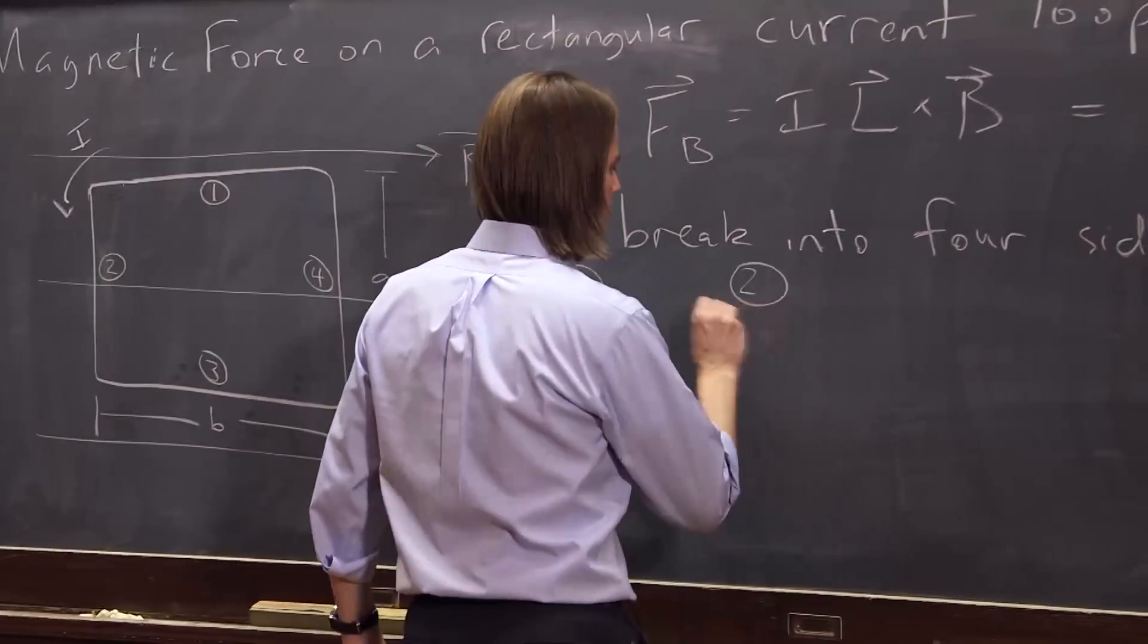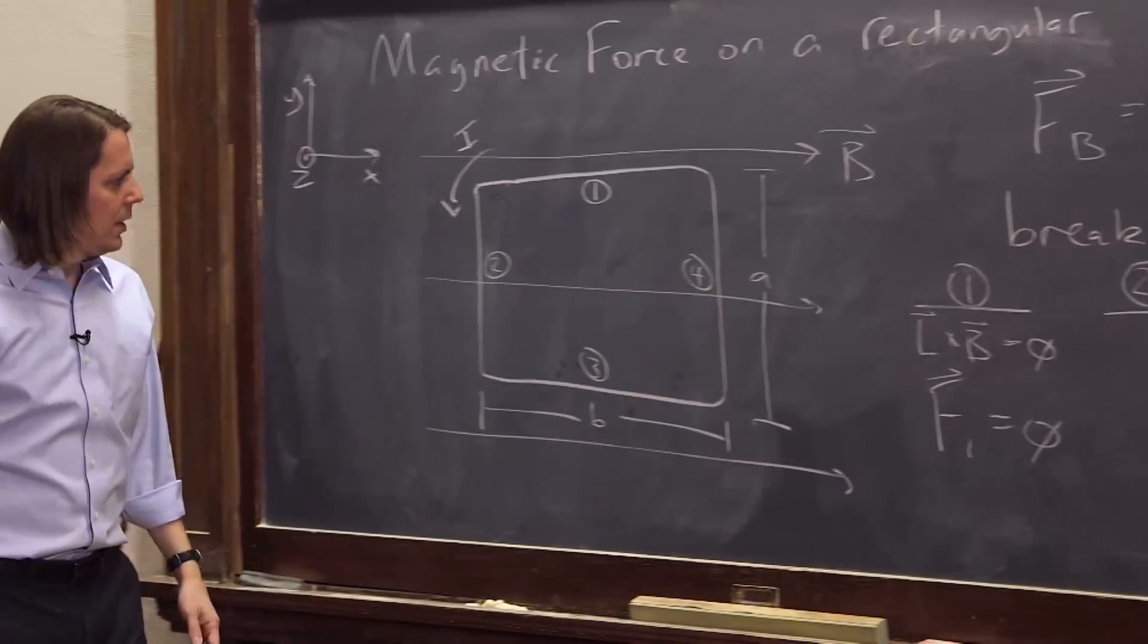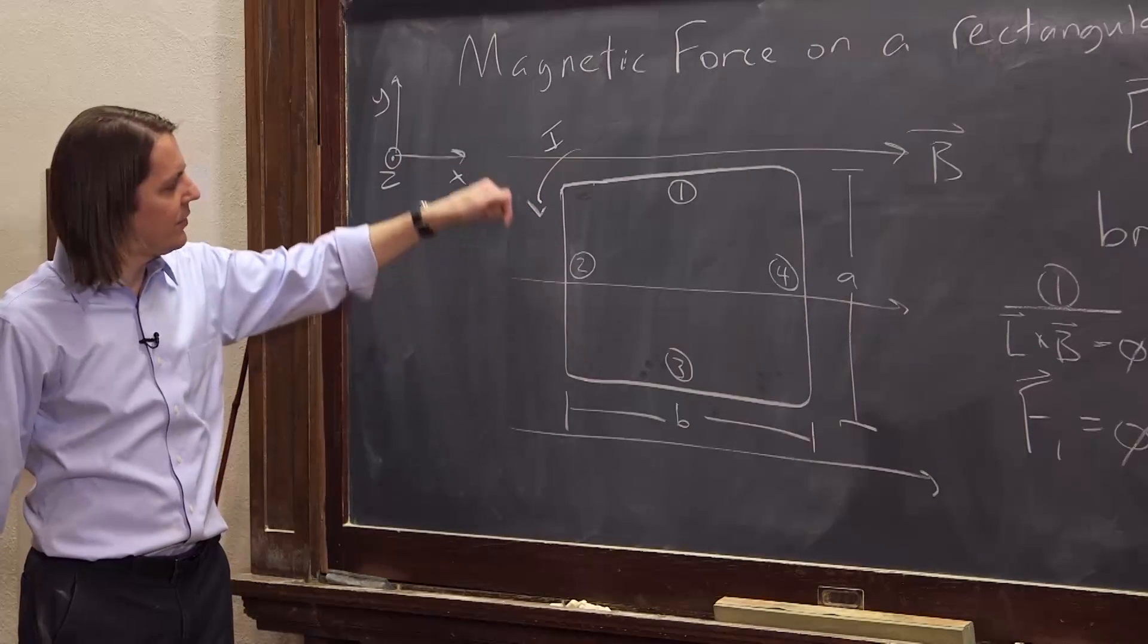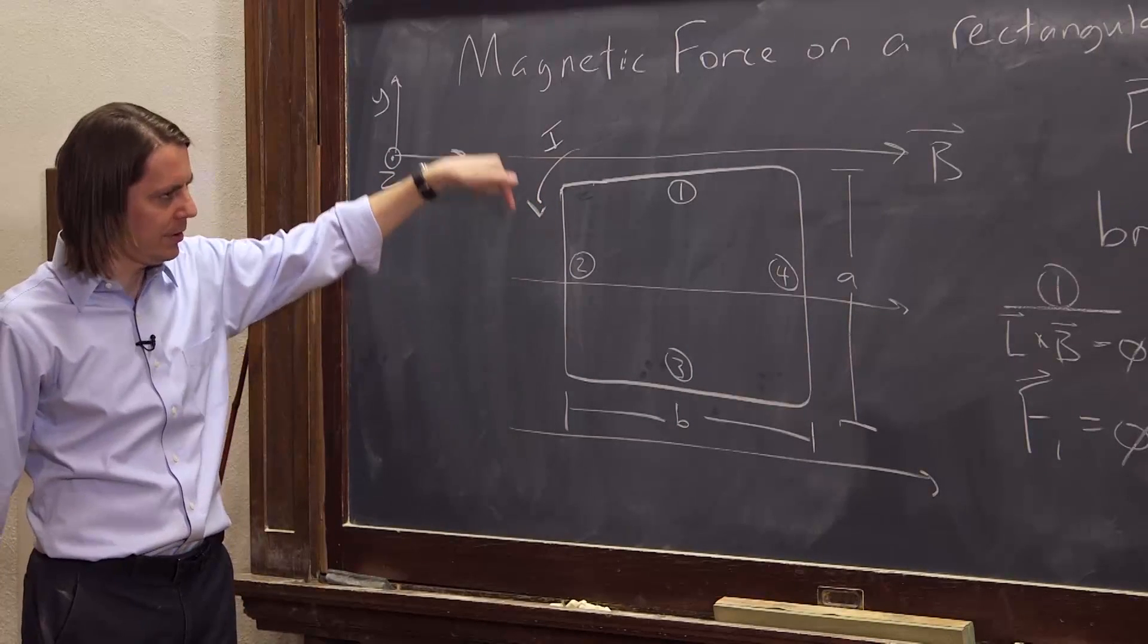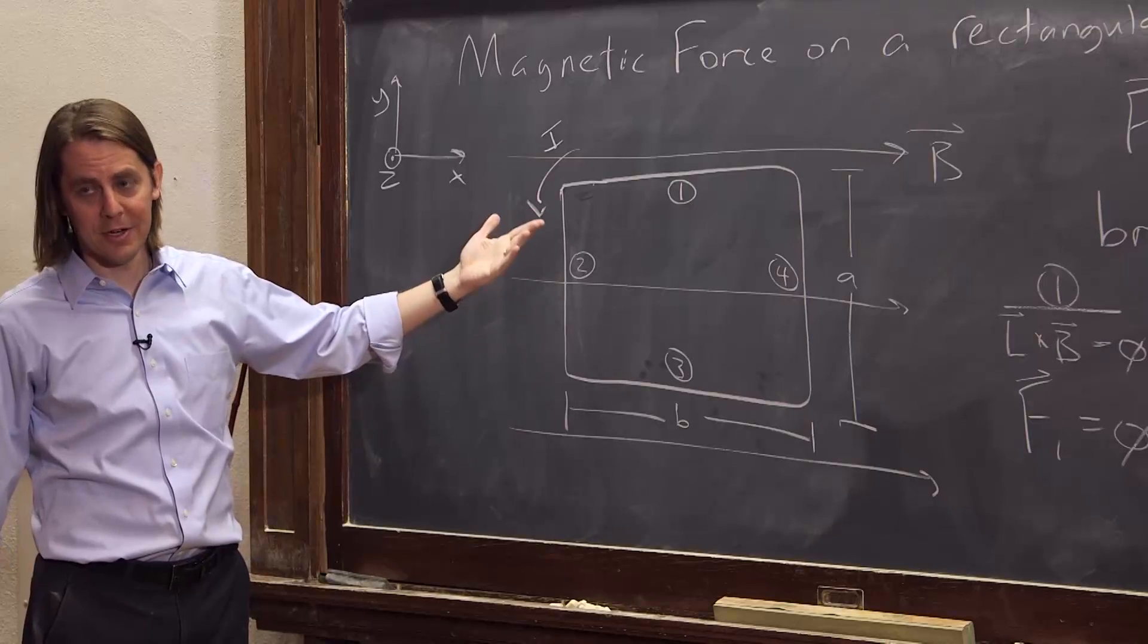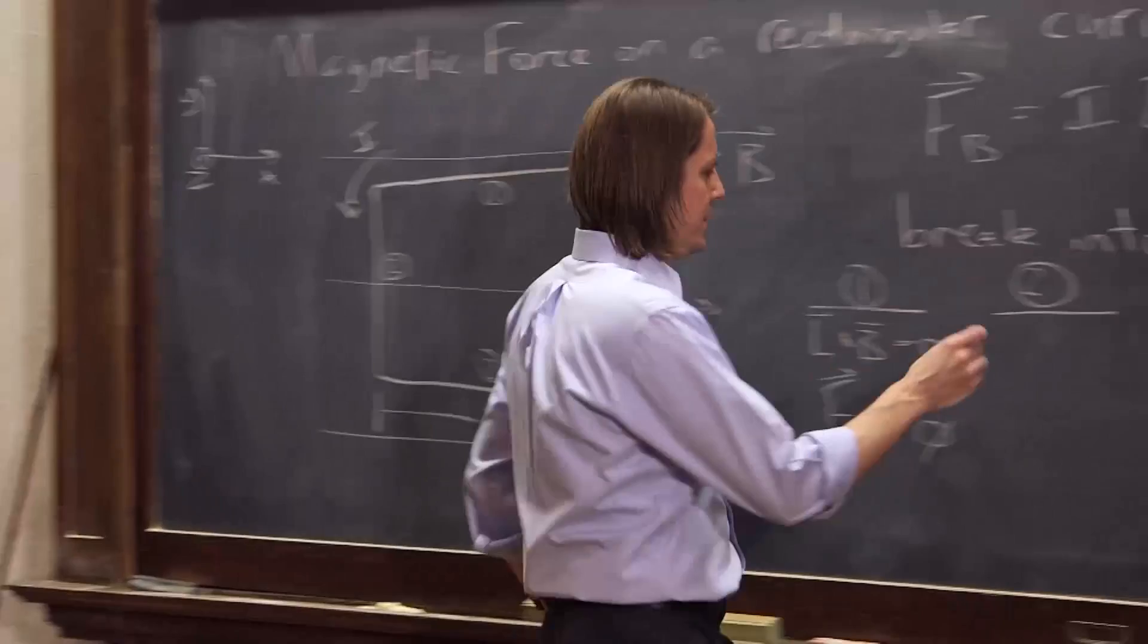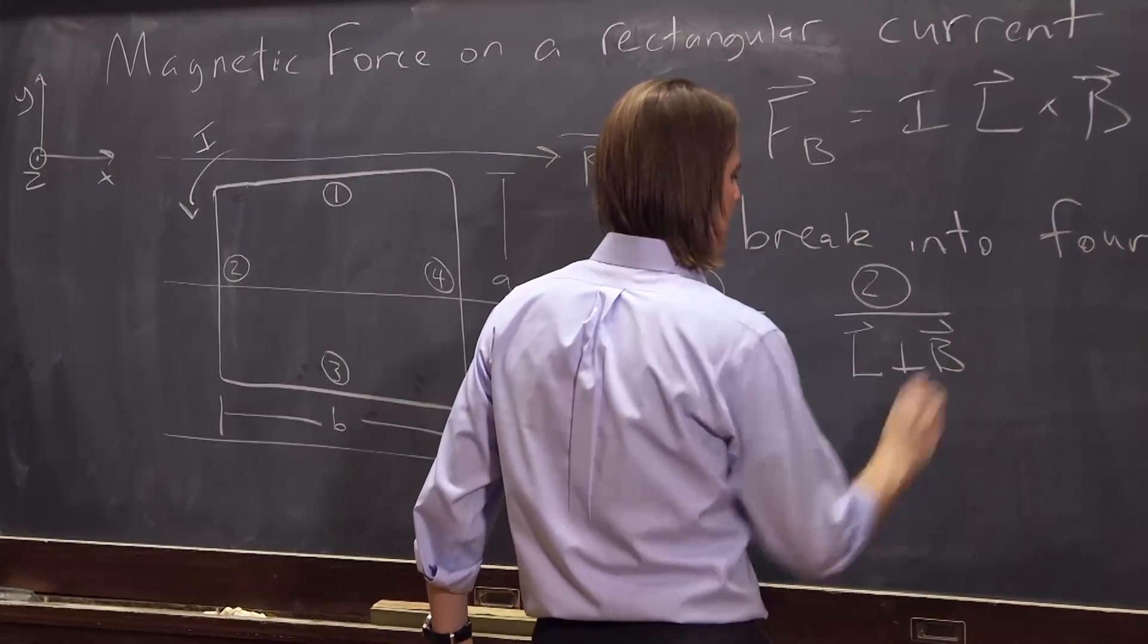Let's keep going. Two. Segment two. In segment two, if you add up all the dS's or you just think of it as an L, it's a vector of magnitude A pointing down. And the B field is to the right. So those are perpendicular. That will give you a cross product. 90 degrees. The sine of 90 is one. So in this case, the force. So here we have that L is perpendicular to B.